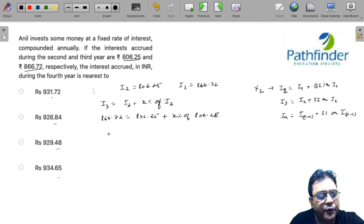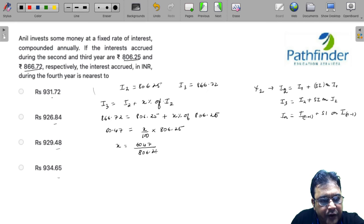If you subtract what do you get? 60.47 is equal to x by 100 into 806.25, which means x is 6047 upon 806.25. This is your rate of interest.